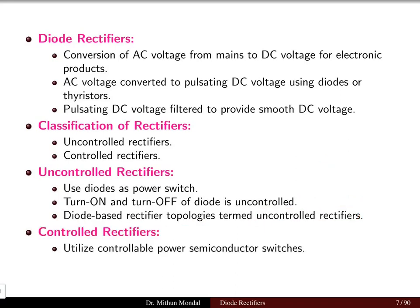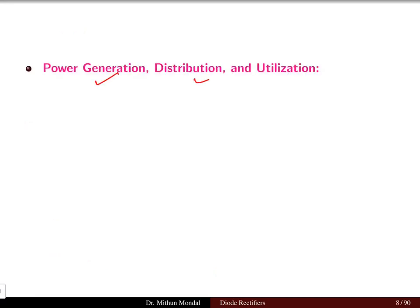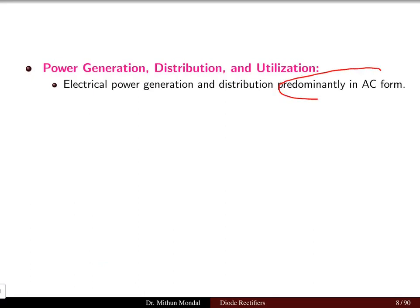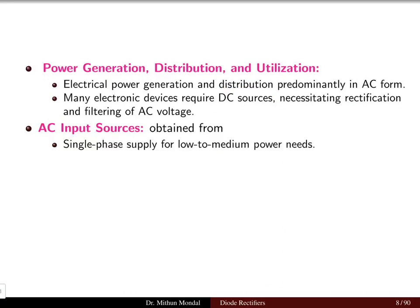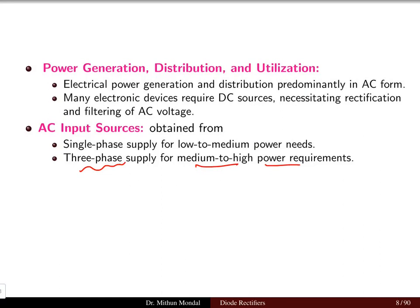Controlled rectifiers utilize controlled power semiconductor switches such as thyristors, MOSFETs, IGBTs, and so on, which we will discuss in detail. Power generation, distribution, and utilization are predominantly in AC form, but electronic devices require DC, which necessitates rectification and filtering of the AC voltage. The AC input source is obtained from a single phase supply for low to medium power needs, and from a three phase supply for medium to high power requirements.